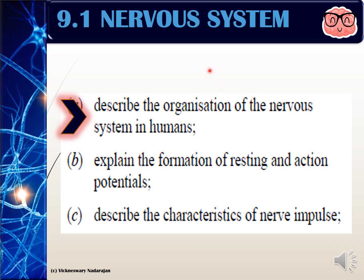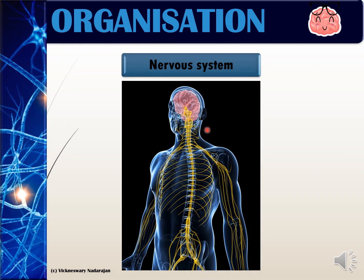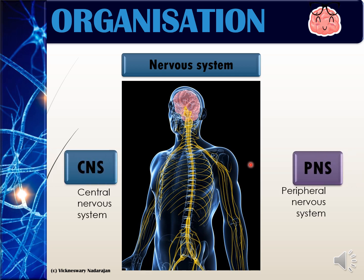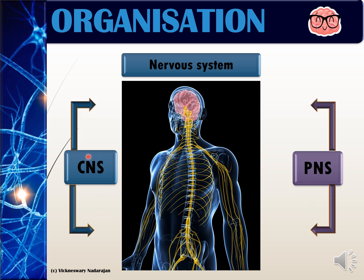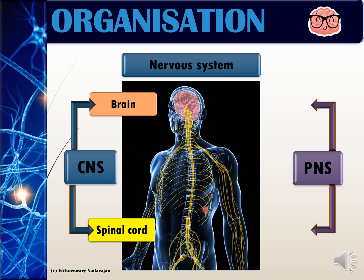According to the syllabus we first need to know the organization of the nervous system in humans. This is the human nervous system which is divided into two parts: the central nervous system and the peripheral nervous system. The central nervous system is made up of two organs, that is the brain and the spinal cord.